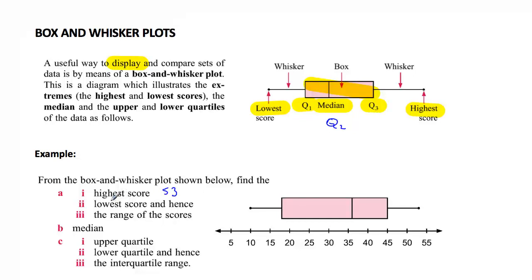But I'm going to continue. The lowest score is down here and we're going to give that a value of 10. Which means that the range of the scores is 53 take away 10 which gives us 43 as the range.